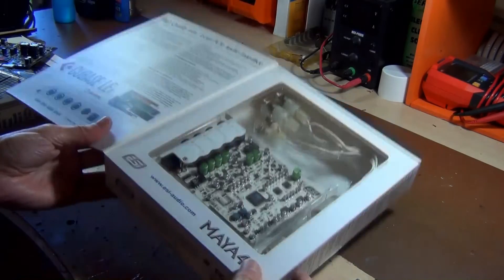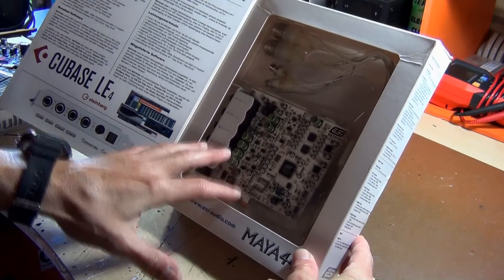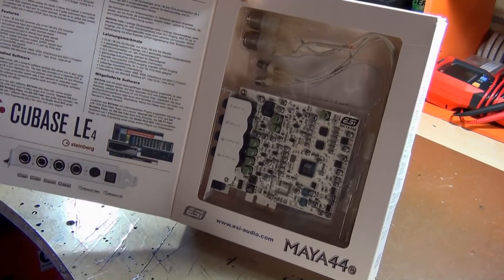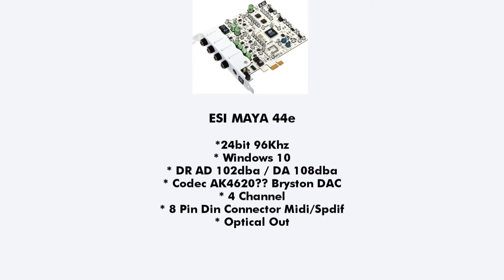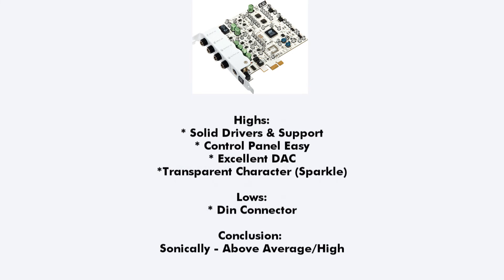Here's another ESI card — the Maya 44e. It's not quite the same spec level as the Julia, but still very nice. It's 24-bit 96 kHz, putting it in the same playing field as the M-Audio 2496, but this is a vastly superior card. It has Windows 10 drivers. Dynamic range is 102 dBA on the AD and 108 dBA on the DA. The codec is uncertain — if anyone knows, put it in the comments. It's a four-channel card, very similar in design to the Quartet. The 8-pin DIN connector layout is the same, and the optical layout mirrors the Julia. Pros: solid ongoing driver support, nice clear control panel, excellent DAC and circuitry, transparent character — I actually think this one sounds a little bit more sparkly than the Julia. The DIN connector is still not ideal. Sonically, I'd rate this borderline between above average and high, because it's sonically very pleasing.